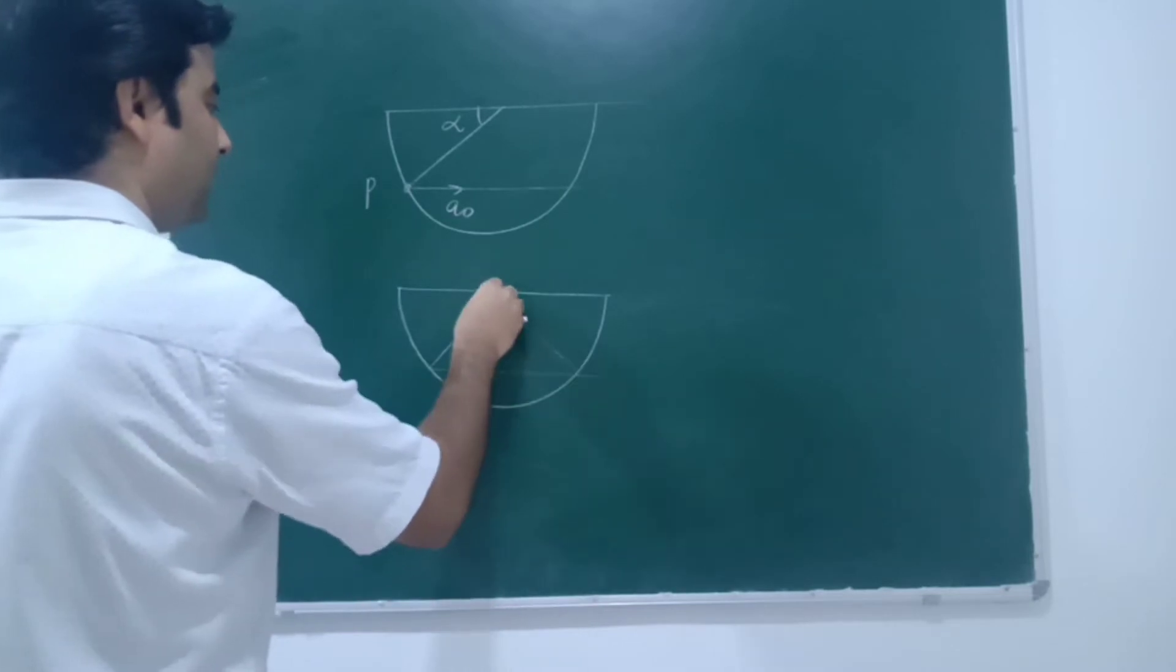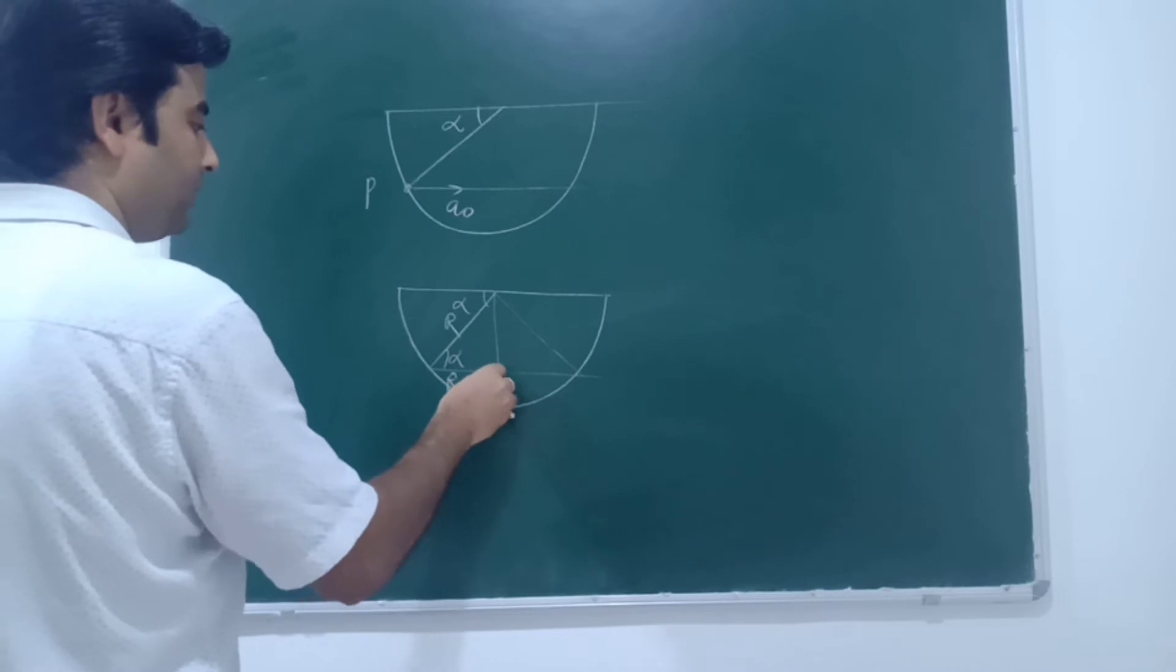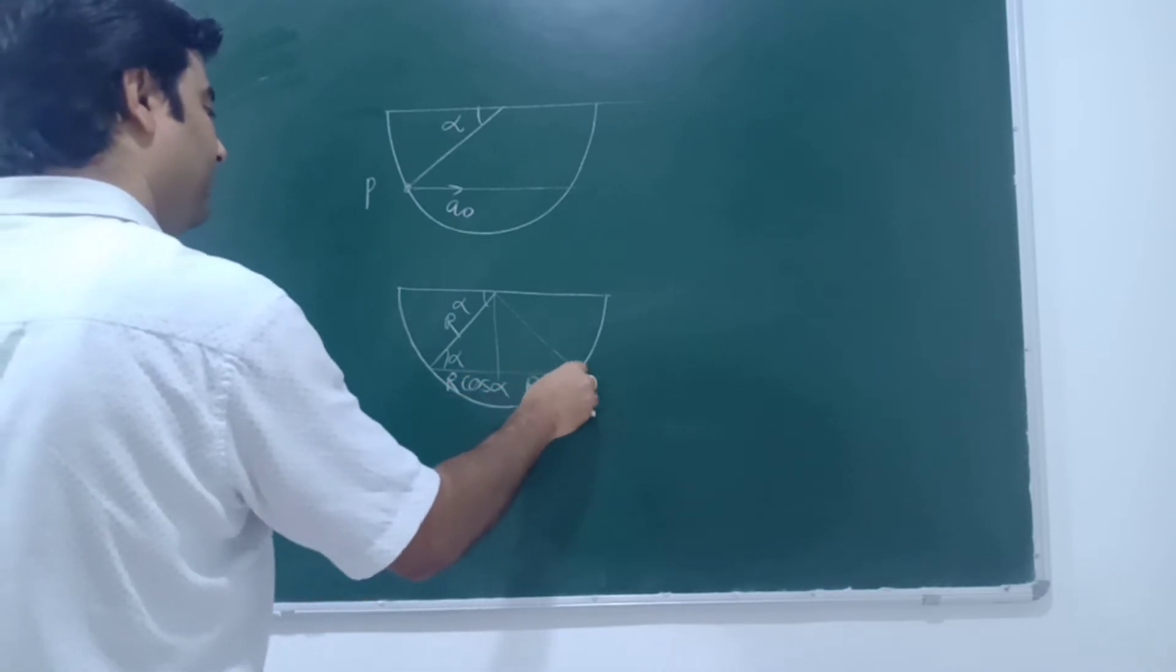See, this angle is alpha, so this angle is also alpha. Now, this is r, so this length will be r cos alpha. This will also be r cos alpha.